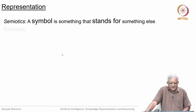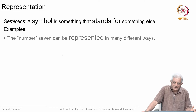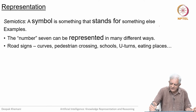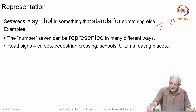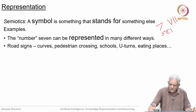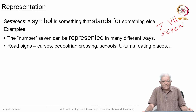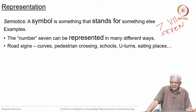We use symbols all the time. For example, the number 7 — you can write it in different ways. You may write it as the Arabic numeral 7, or in Roman numerals, or in English as the word 'seven'. There are various other ways using any language. So you can represent it in different ways, but we are talking about a number called 7.